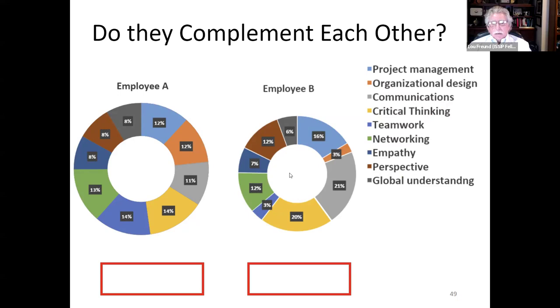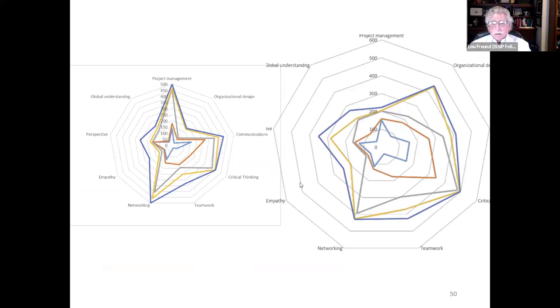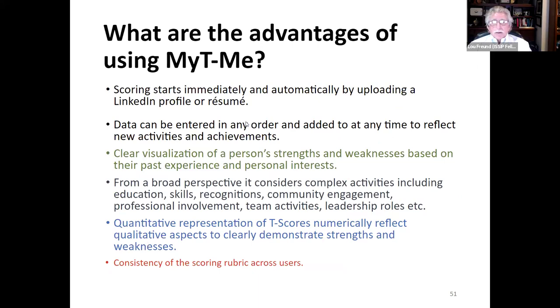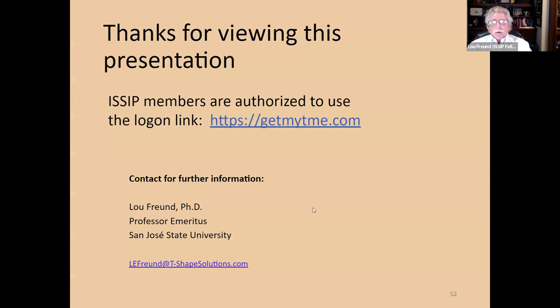It builds a bridge between your strengths and potentials for future development, identifies trends in employee strengths to improve team building and optimize performance, can create a structure for effective career coaching to enable more effective career decisions. It's a foundation for personal planning and growth and goals for continuing professional growth and volunteer experiences. In addition, you can look at T-scores comparatively and look at how individuals are alike and differ and complement each other through their pie charts as well as their spider diagrams. There are advantages in that scoring starts immediately and it's automatic. Data can be entered in any order. There's a clear visualization of a person's strength. It considers complex activities and represents them in the T-stem and T-top paradigm. Quantitative representation of T-scores numerically reflect qualitative aspects to clearly demonstrate strength and weaknesses and it does maintain a consistency in the scoring and rubric across users.